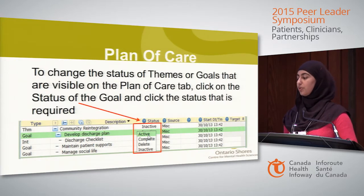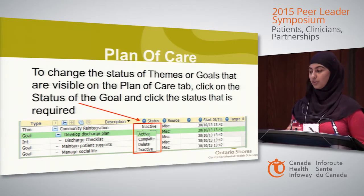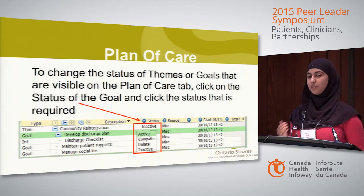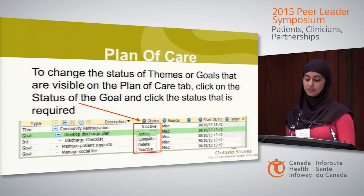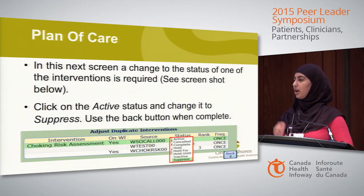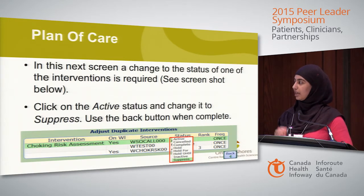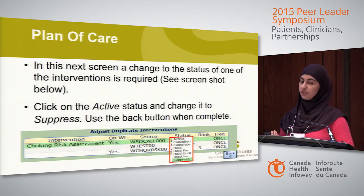Clinicians can change care plan intervention statuses to active or inactive based on patient needs, or to complete when a goal has been met. The system also automatically flags duplicate interventions, alerting clinicians when two identical interventions exist. Clinicians can then suppress one to maintain a single documentation form.